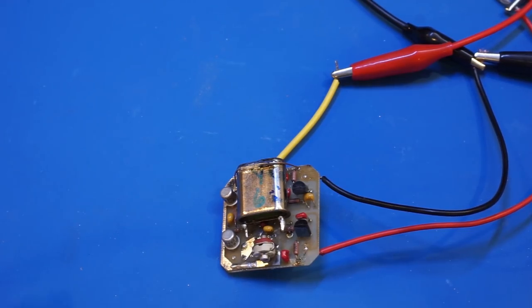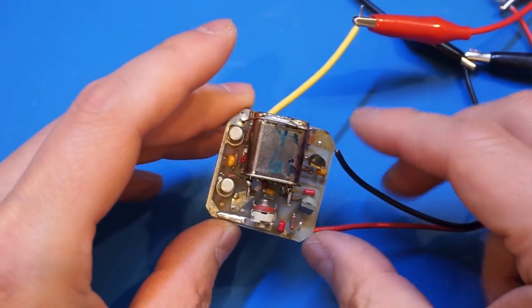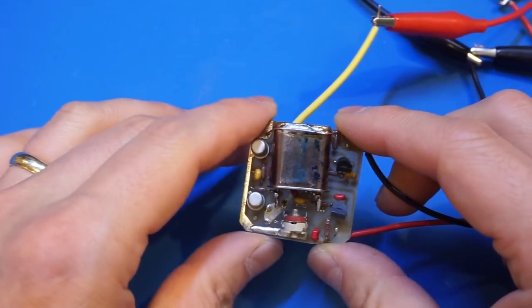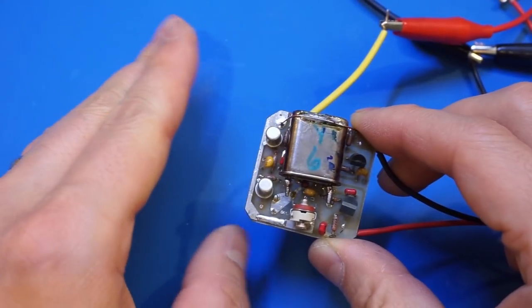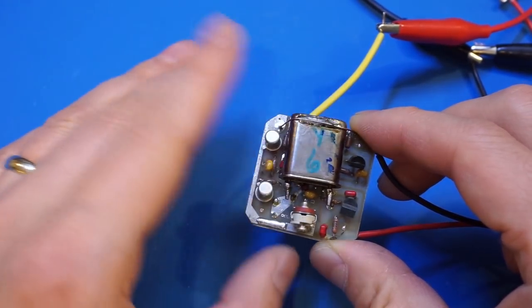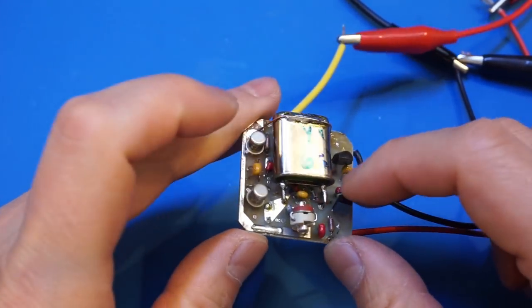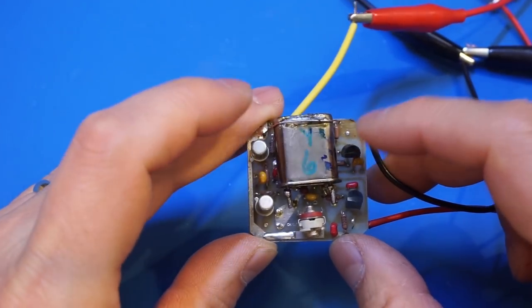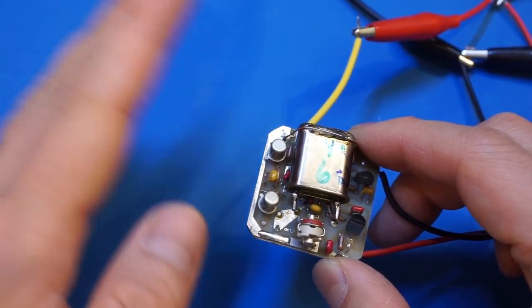So I think the reason that this TCXO cannot be adjusted back to its specified range is some components, especially the crystal oscillator here, has significantly aged. And so the oscillating frequency, the resonant frequency drifted somewhat. And also, it may be that some part of the circuit depends on the parameters of these transistors and the capacitors had drifted out of range.